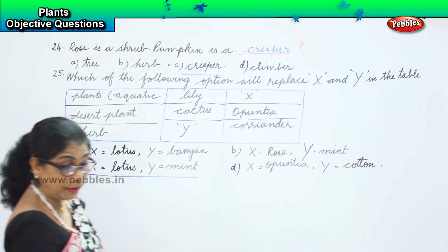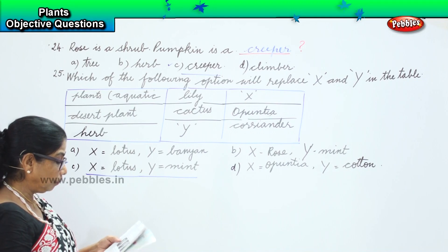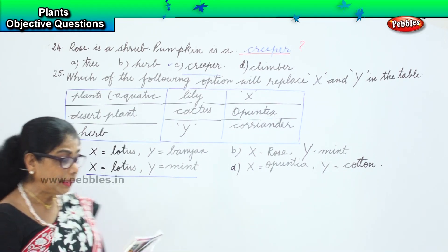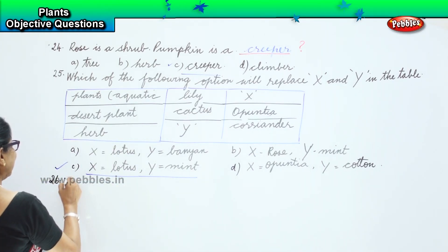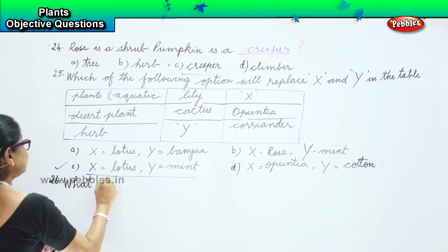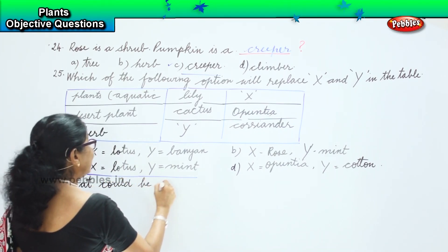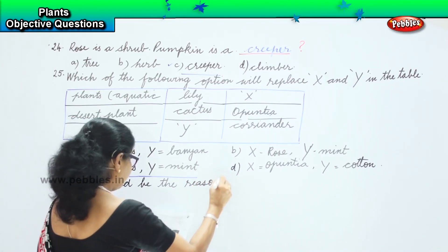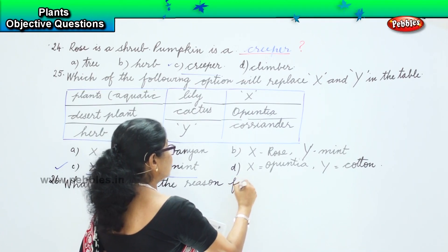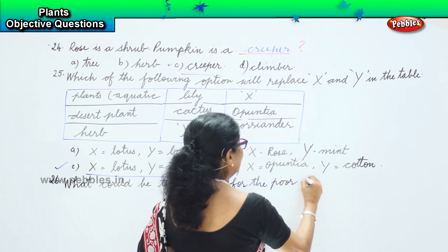That's the twenty-fifth answer. Now we go to the twenty-sixth question. What could be the reason for the poor growth of a plant?